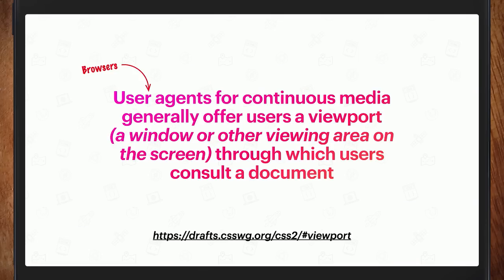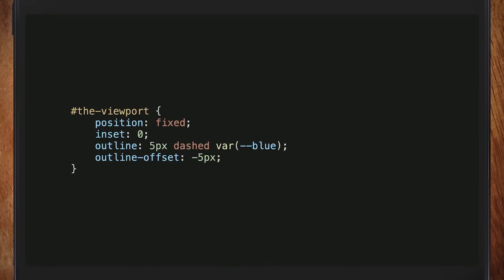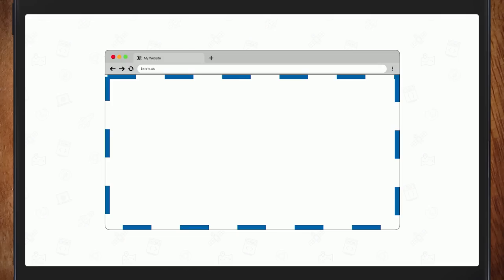If you want to visualize it, this is the CSS you can use. You insert an element, do position fixed, inset zero — which is top, right, bottom, left all zero. I'm using an outline here, not a border, because border can affect its size. Outline goes on the outside. If you do this, the outlined area is the viewport.